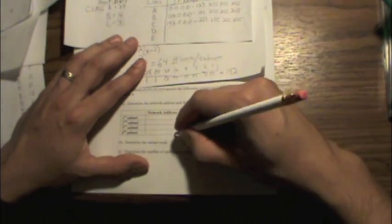That's going to be the first subnet. We add 64, which is going to be 64. We're going to add 64 again. We're going to get 128. We're going to add 64 again and get 192.